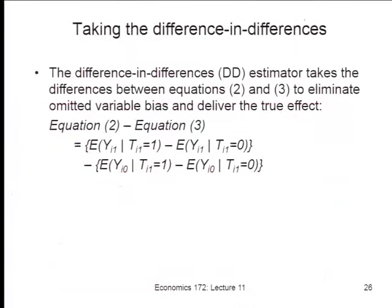Taking it back to our regression, the difference-in-difference estimator is the difference between what we called equations 2 and 3 — the difference between the two groups over time. Diff 1 minus diff 0 gives us our minus 18%. Why are these results a lower bound? We've seen this effect of minus 18%, but we know that the folks who left work because of AIDS died and their productivity went to zero. So we're clearly underestimating the effect.